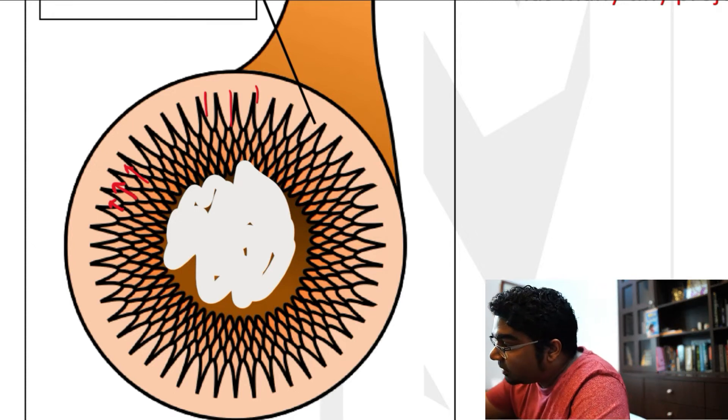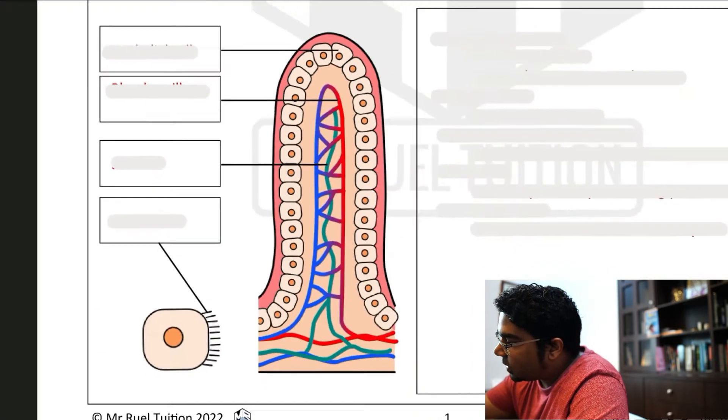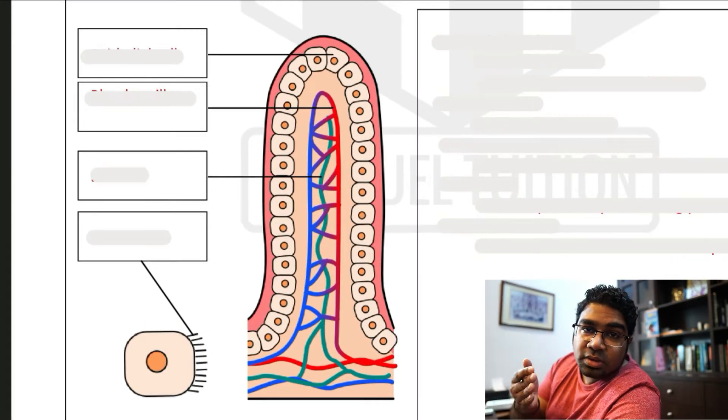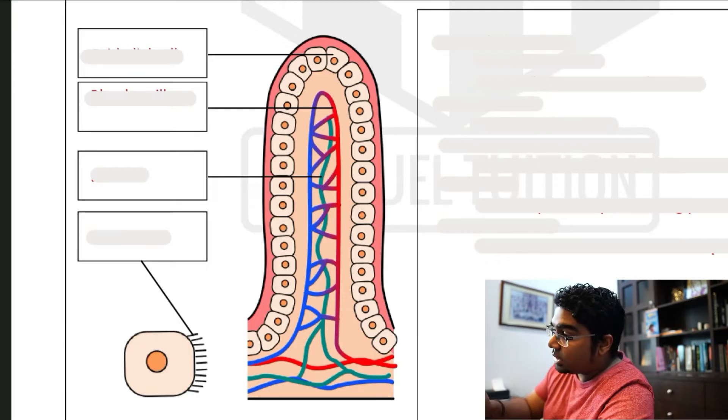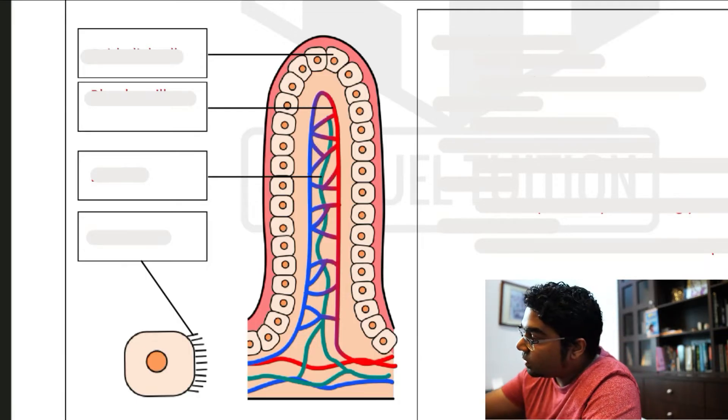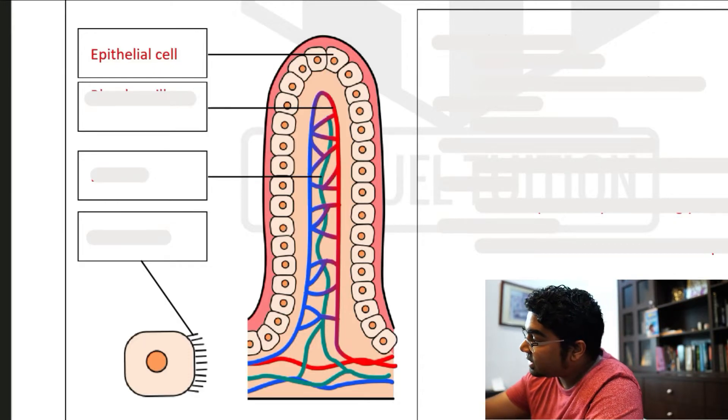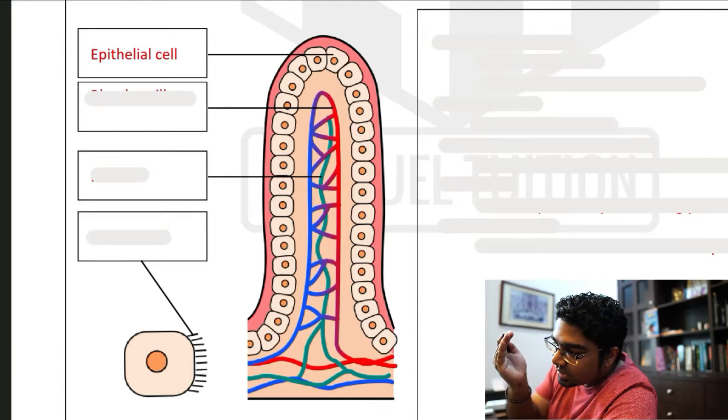Now, there's another adaptation of the villus itself. So now we zoom in into a single villus. And this is how it looks like. As usual, the outer covering of any part of the body is the epithelial layer. And so we have epithelial cells.